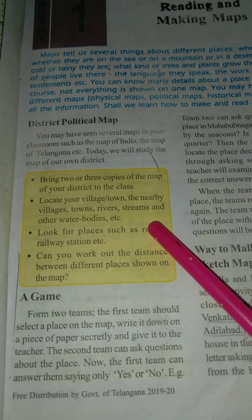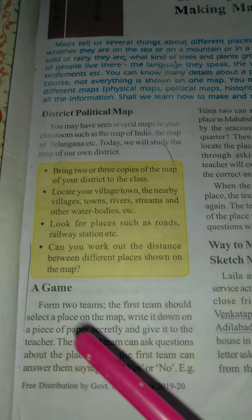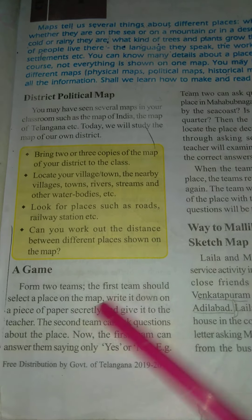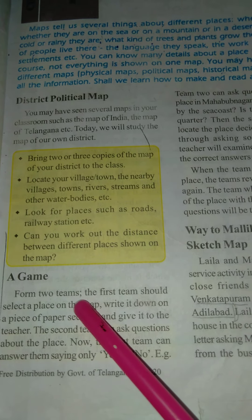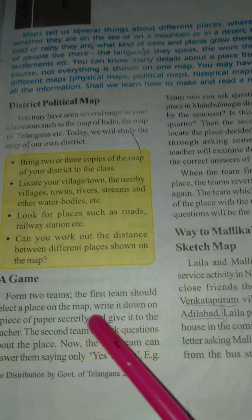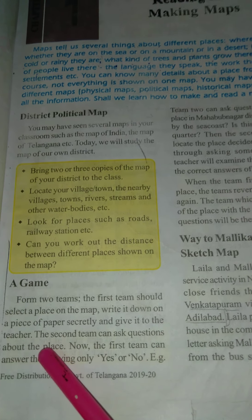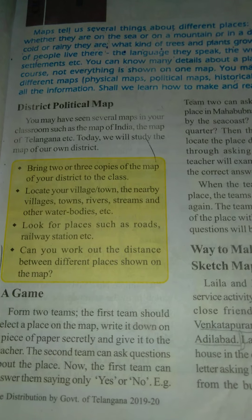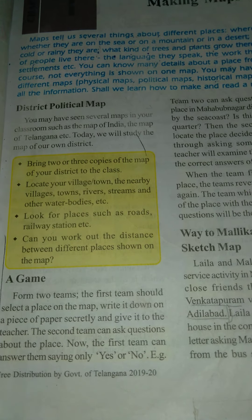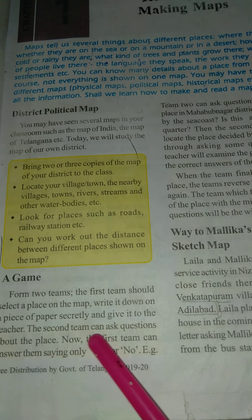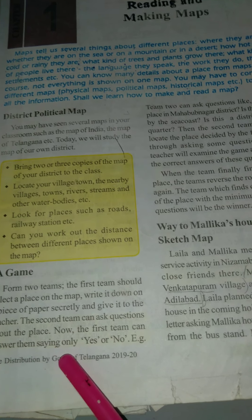I hope you understand the district political map. Now, since you are in online classes, we will do this game in school. Make two teams from your class — if there are 20 members, ten in each team. The first team selects a place on the map, writes it secretly on paper, and gives it to the teacher. The second team asks questions about the place, and the first team can answer only yes or no.